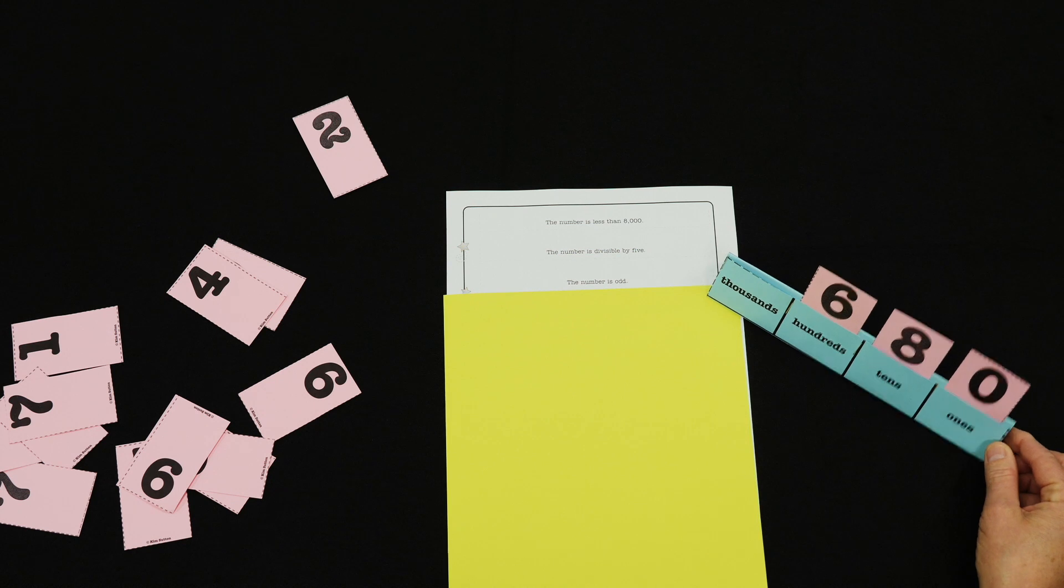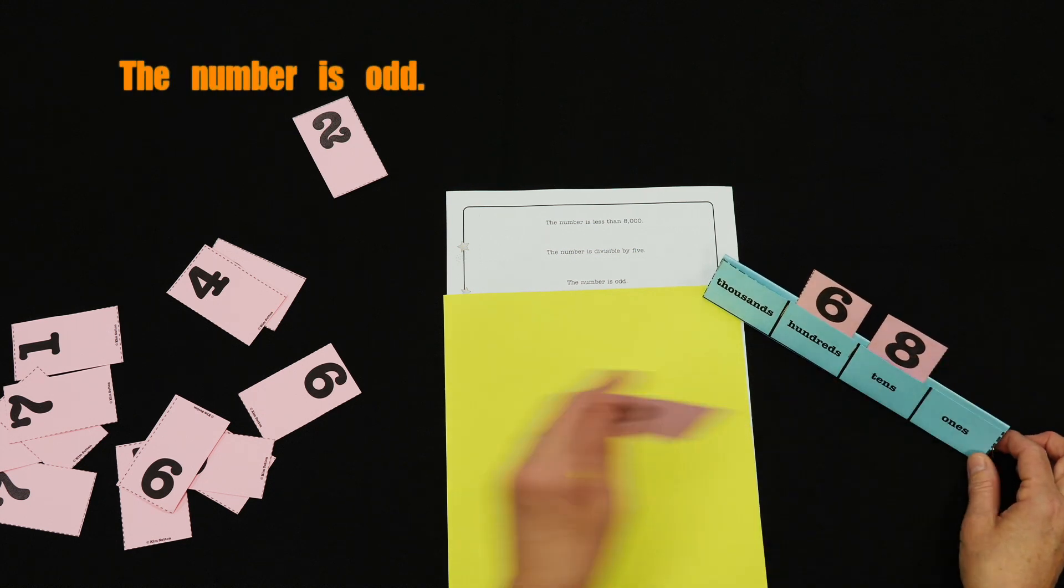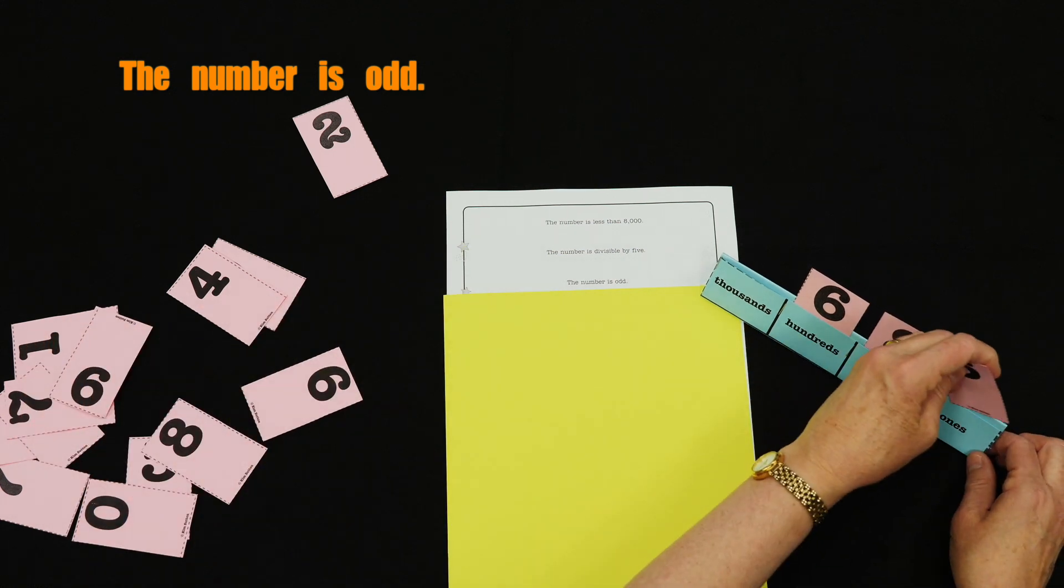Next clue is given: numbers odd. I've got to change that to a five in the ones place.